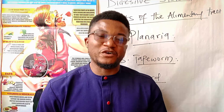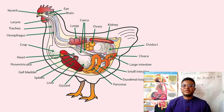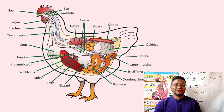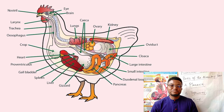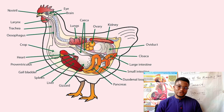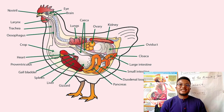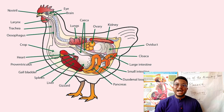The next alimentary tract we are going to look at is that of the bird. The digestive system of the bird is simply made up of the beak, the mouth, the pharynx, the esophagus, the crop, the proventriculus, the gizzard, the intestine, the rectum, and the anus.